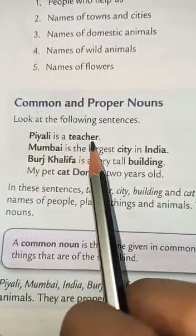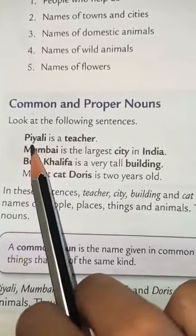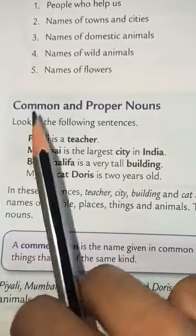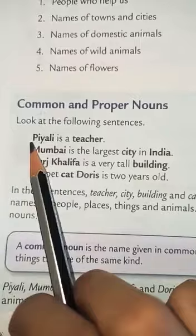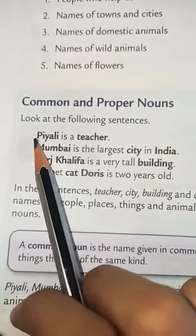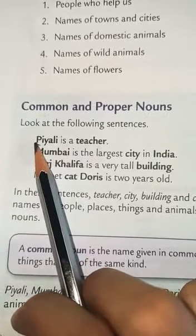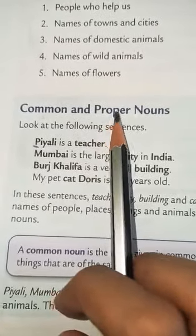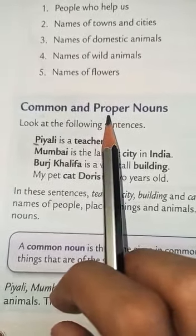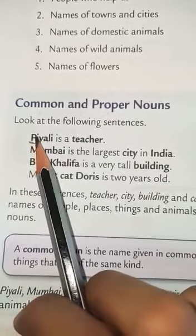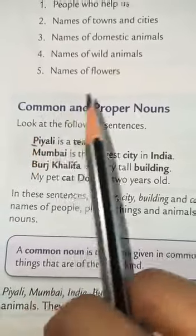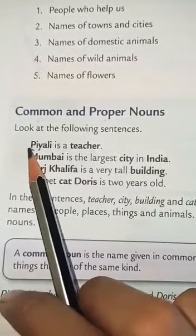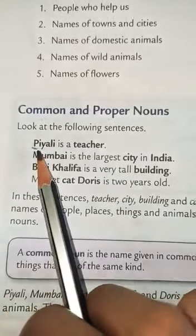Piyali is a teacher. Here, Piyali is a particular, specific name of one girl - it is not used for anyone else. Notice it is written with a capital P. When something has a proper name specific to one person or thing, that is a proper noun. Proper nouns always start with a capital letter, as you can see with Piyali.